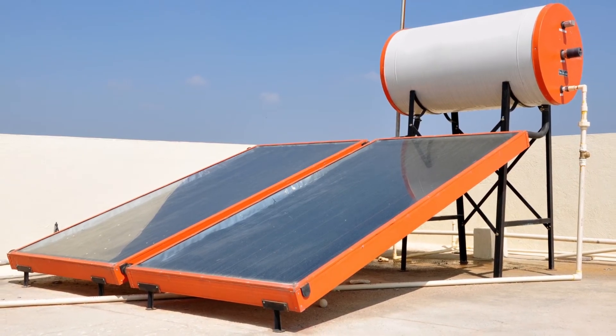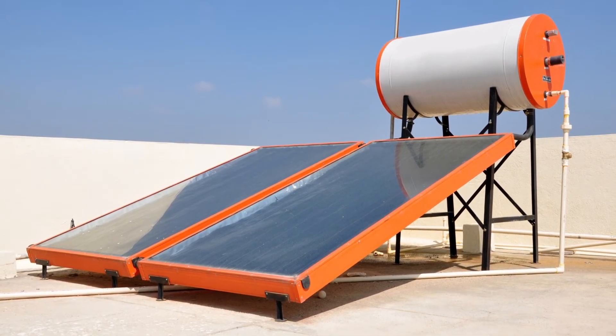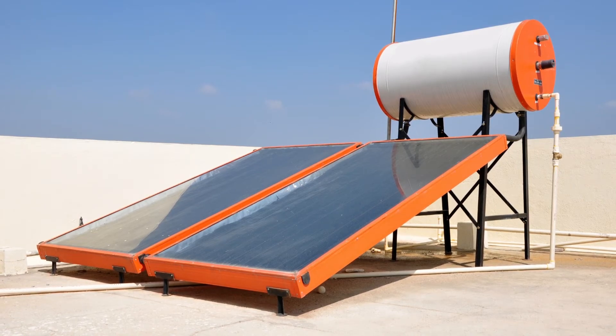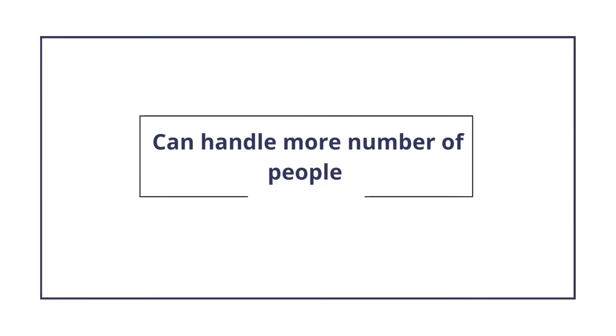While in a solar water heater, when the weather condition is not good, then you have to manually switch on the electrical backup coil, wait for some time and then go for bath and then manually switch it off. The advantage is it can handle more number of people.